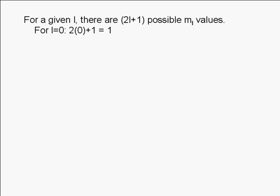In general, we can say that for a given value of l, there are 2l plus 1 possible m sub l values.